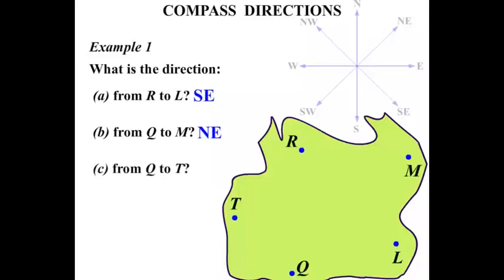What about from Q to T? Well, there's Q and we're going towards T. So in that direction there, we repeat that on the compass. That direction, NW, North West.